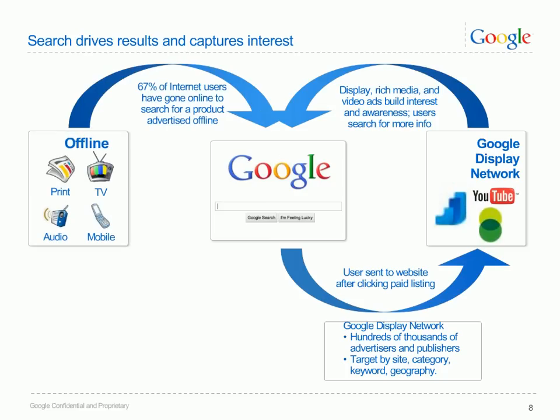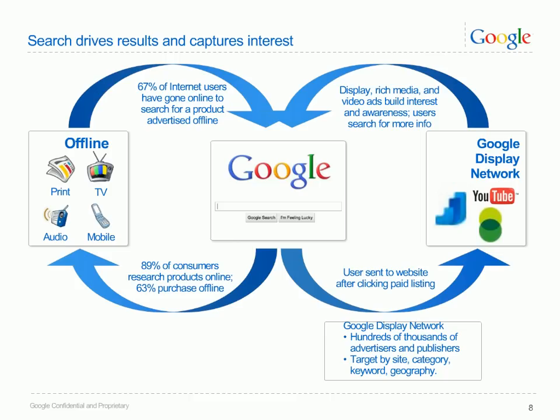Independent research has shown that TV is the biggest driver of online search. As users are exposed to offline messaging, they use Google to learn more about a product or service they may have encountered through another medium. Therefore, Google adds value to offline advertising. Consistent, integrated cross-media campaigns will generate a higher return. The value of search does not just lie in clicks and conversions — consumers use Google to research and inform their purchase decisions. They may however choose to buy in bricks and mortar stores, so it is important to consider the role of online advertising in this type of sales and not limit AdWords' effects simply to online conversions.